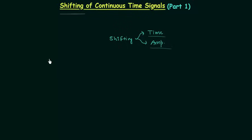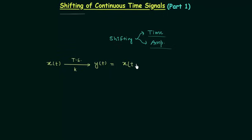Let's say the original signal is x(t) and after time shifting the new signal is equal to y(t). In case of time shifting we add a constant to the time — let's say the constant is equal to small k. So the new signal y(t) is equal to x(t + k). Here we have time t, but in the new signal we have t plus k, and k is also a time, it is constant, and generally it is given in seconds.